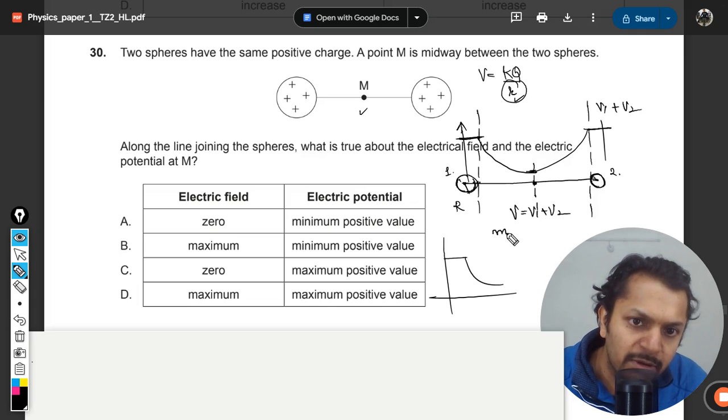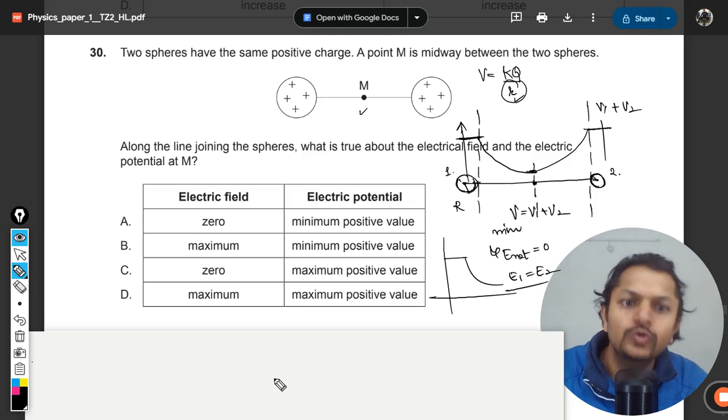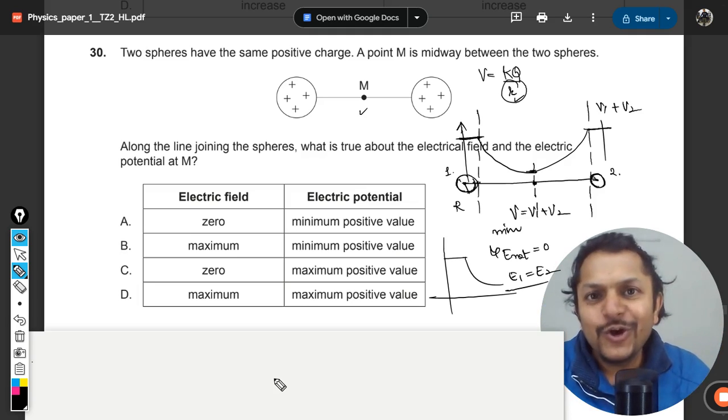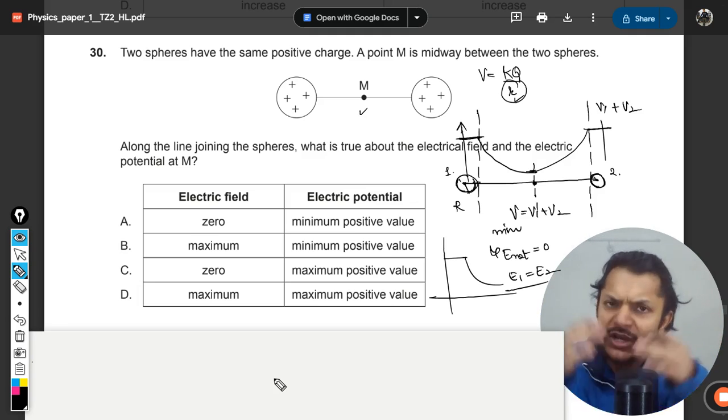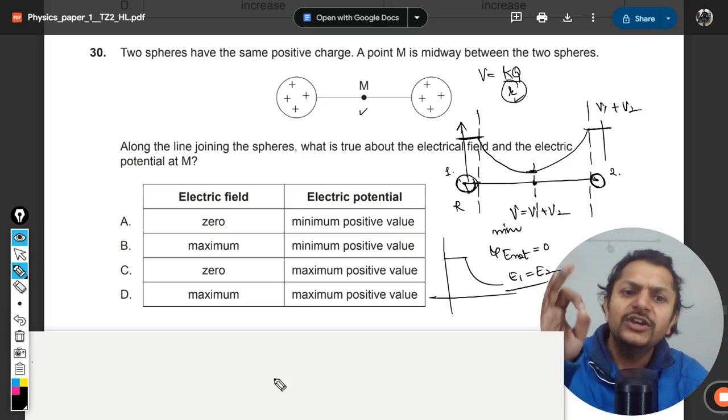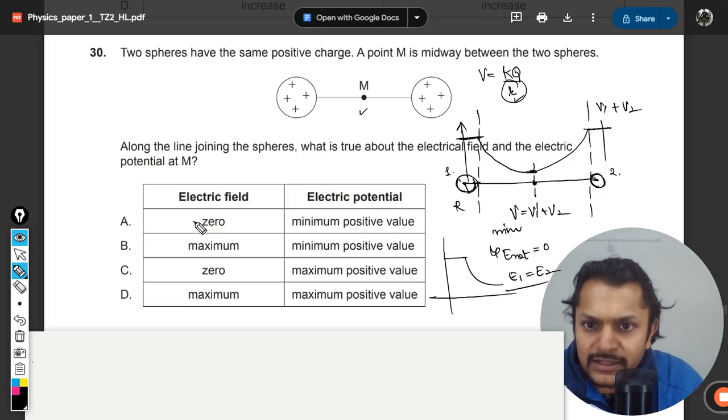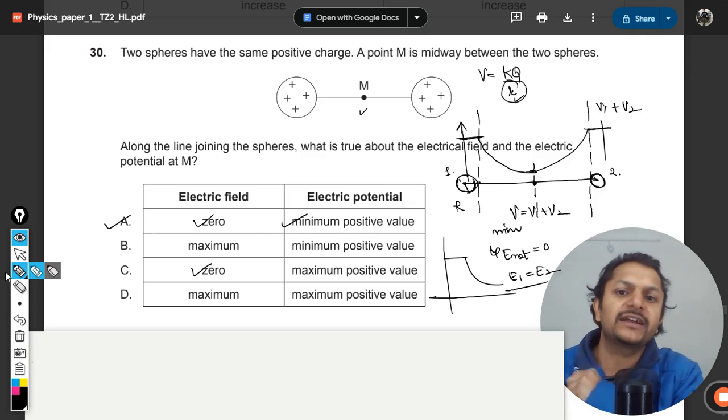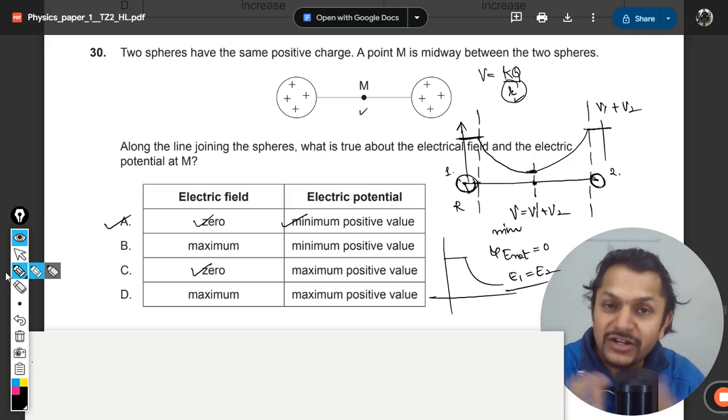So E net equals zero, which means E1 equals E2. This question is very important from the point of view of paper two also, so you must remember these things. Accordingly, the electric field will be zero and it will be minimum positive value, so A will be the correct answer, no doubt about that.